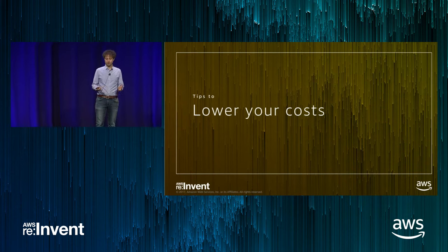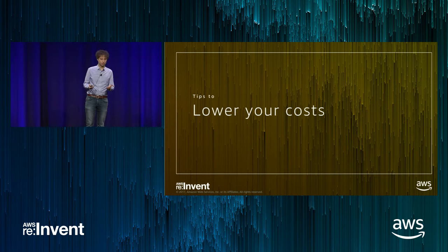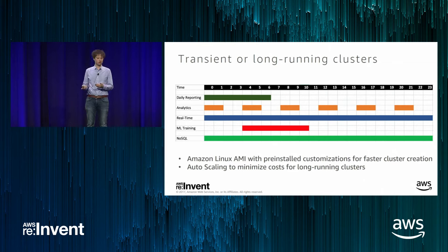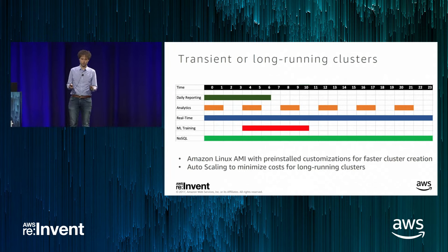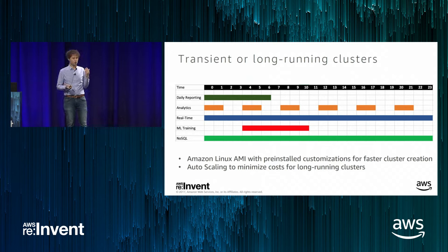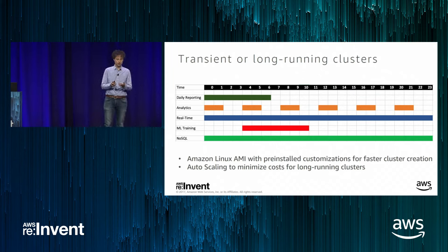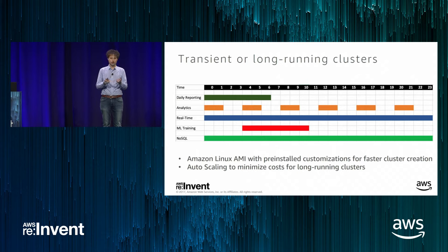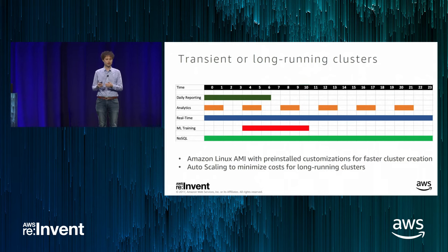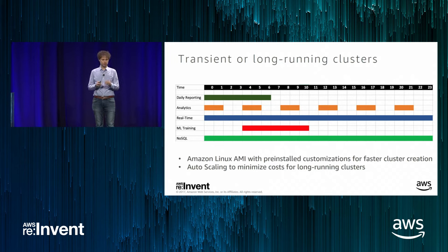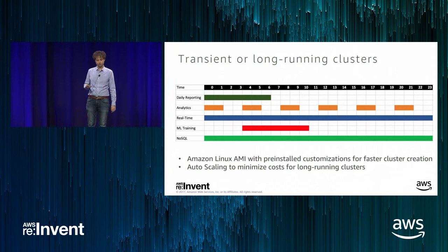Moving to cost-saving strategies: one key consideration is transient versus long-running clusters. Some think EMR is only for transient workloads, but people run clusters for many months. The real question is whether you need the nodes up — if you're paying for a Hadoop node that's idle, you're wasting money. Consider batching workloads together, shutting the cluster down between runs, and separating always-on clusters for ad-hoc use with auto scaling from batch clusters that can be terminated.